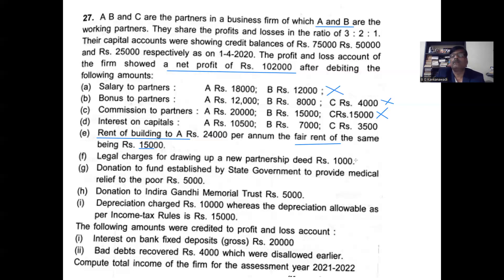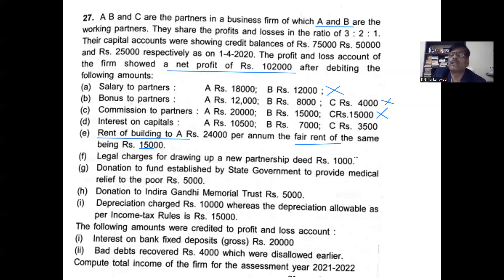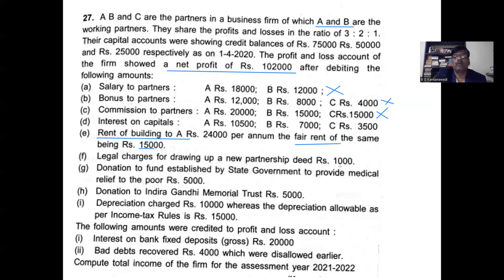Legal expenses of drawing the partnership deed — 1,000 — you may allow or disallow this. If you disallow it, this is considered capital expenditure because the partnership deed is an asset agreement. So it is treated as capital expense and disallowed.